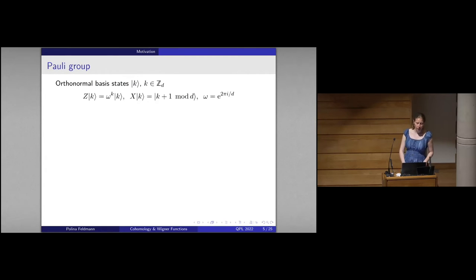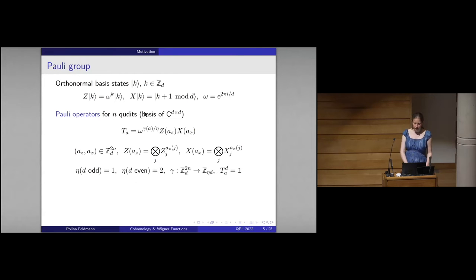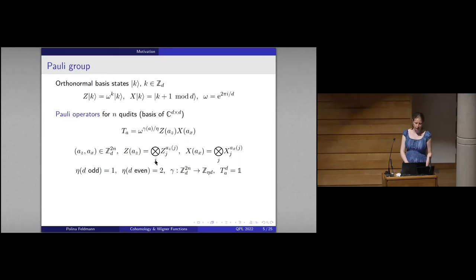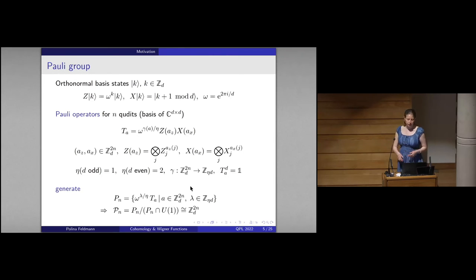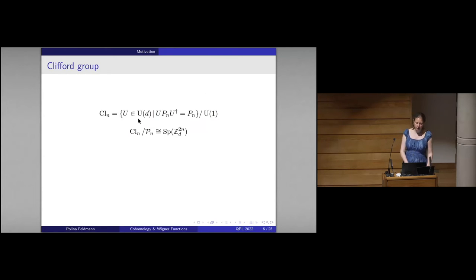A single qudit is described by orthonormal basis states, from which we introduce generalized Z and X operators. From Z and X, we construct a basis of Pauli operators for N qudits, where the Pauli labels tell you on which qudits to apply the Z and X operators. The definition of Pauli operators depends on a phase convention gamma. Multiplying Pauli operators together generates the Pauli group, and removing global phases gives back the set of Pauli labels. The Clifford group consists of all unitaries leaving the Pauli group invariant divided by phases, and dividing by Pauli labels gives the symplectic group.